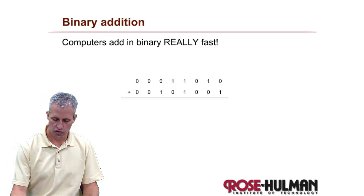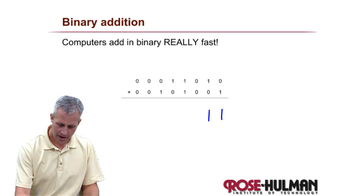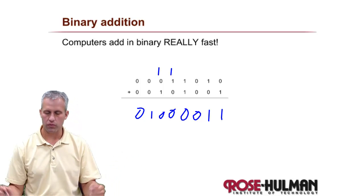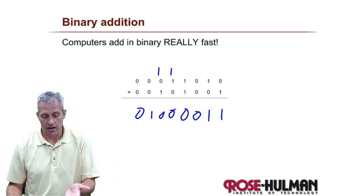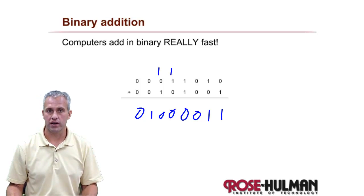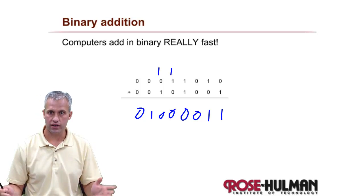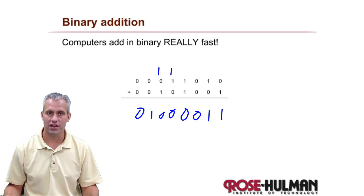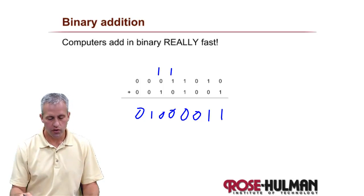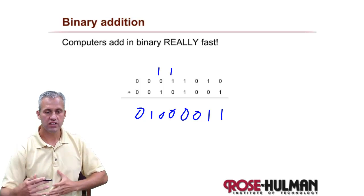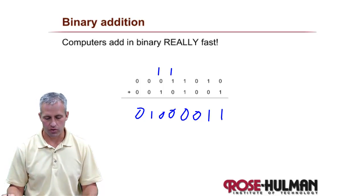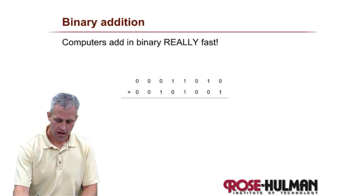If a computer was adding two binary numbers, it would be able to add them up fairly quickly — you could do this as well. It would just carry ones as necessary, and it would do the math. It can do this in less than one microsecond — many, many millions of them in a second. So it's really fast. And this actually leads into why they do something you might not expect with how they handle negative numbers, because computers do addition like rock stars.